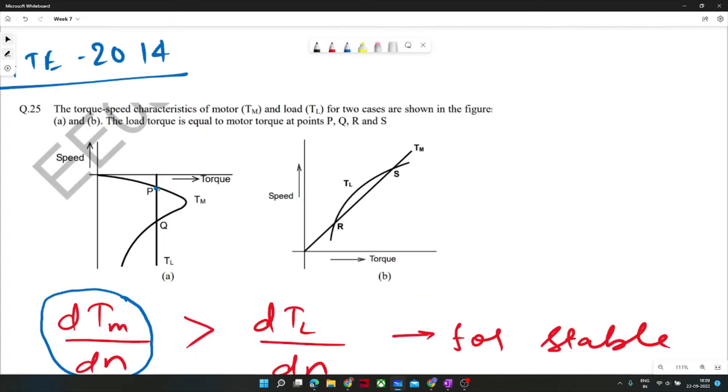This is TL, this is speed, and the blue one is Tm. At this point, the slope of motor torque variation with speed (dTm/dn) is higher than dTL/dn, because the slope of dTL/dn is zero at P, and dTm/dn is increasing. Since it's higher, it will be stable.